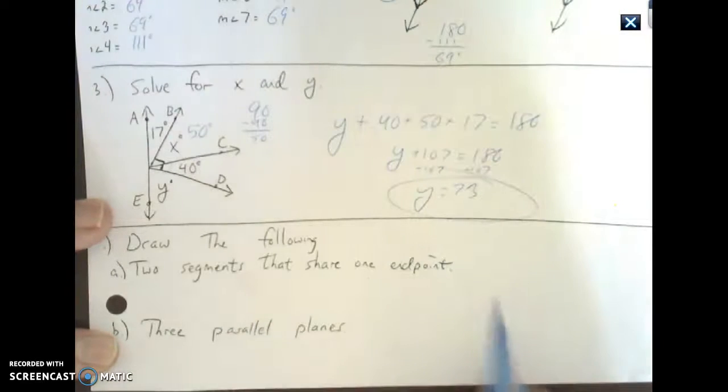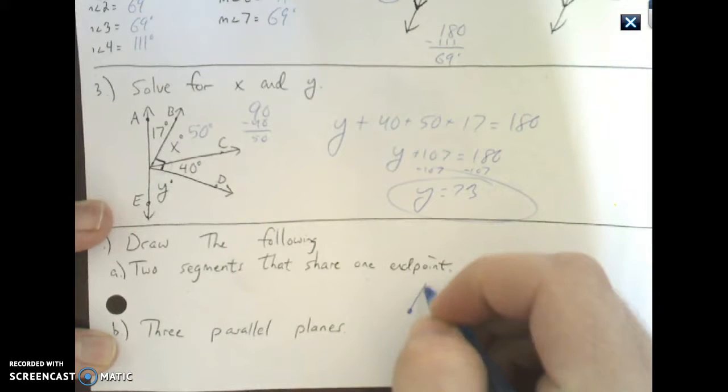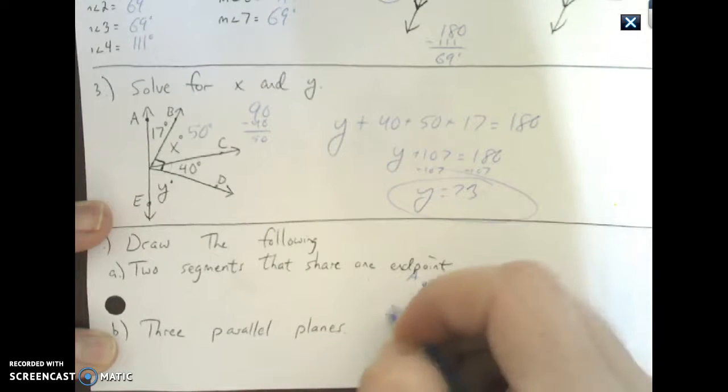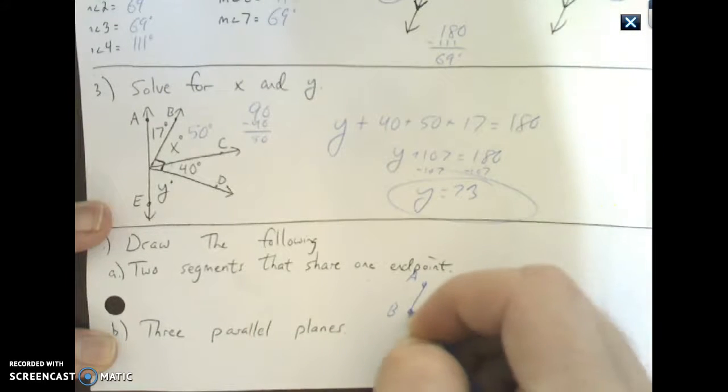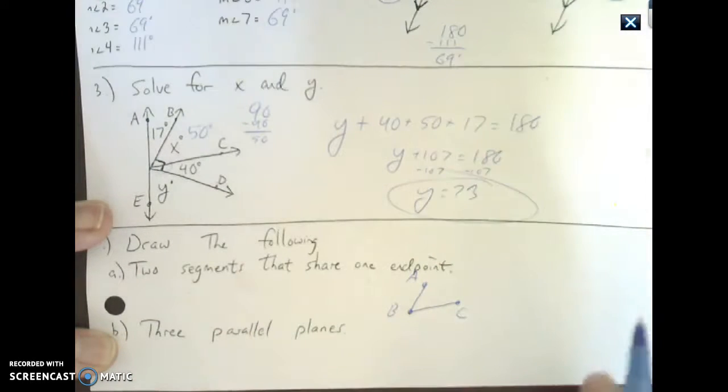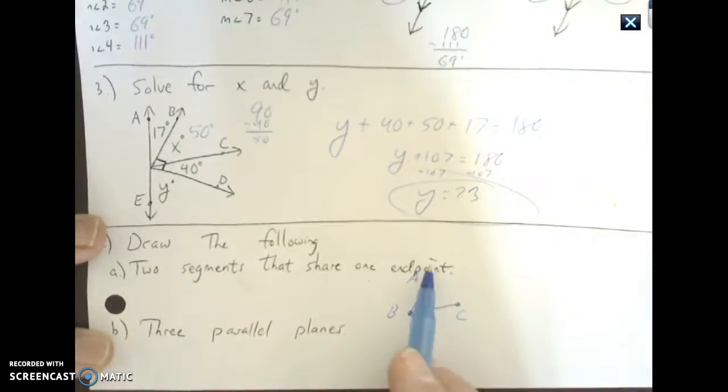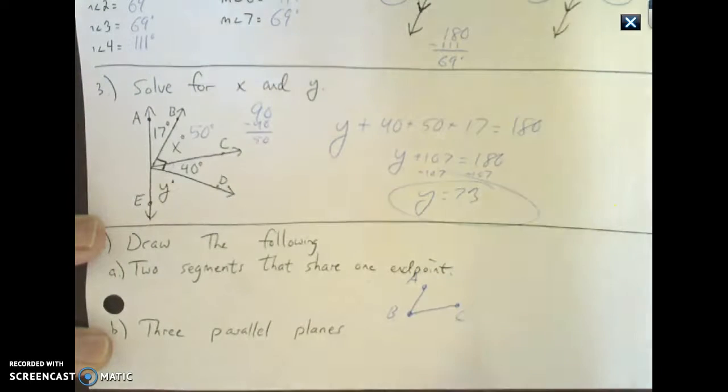Two segments that share one endpoint. There is one segment, A, B, C. There's two segments, no arrows you're all good. Three parallel planes you go parallelogram parallelogram and use capital letters for them.